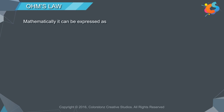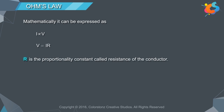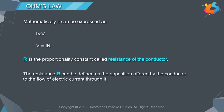Mathematically, it can be expressed as I is proportional to V, and V is equal to IR, where R is the proportionality constant called resistance of the conductor. The resistance R can be defined as the opposition offered by the conductor to the flow of current through it. R is equal to V by I.